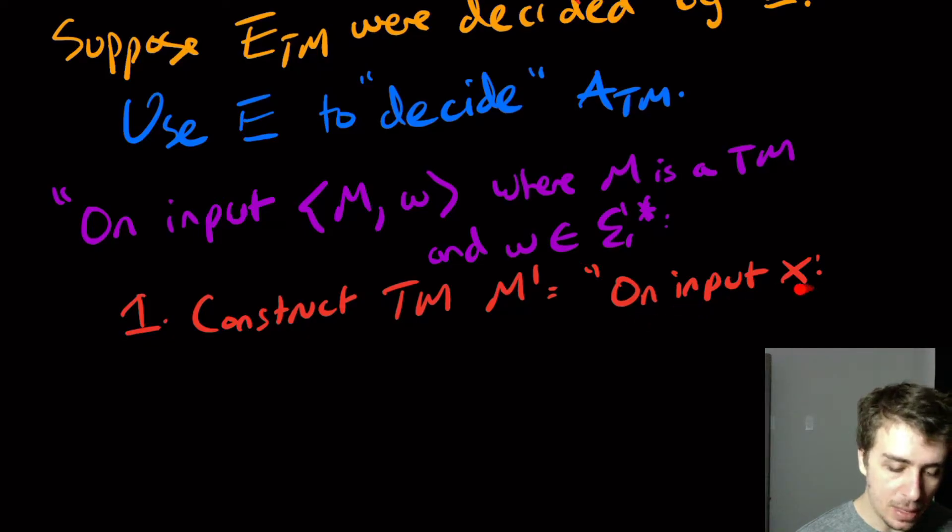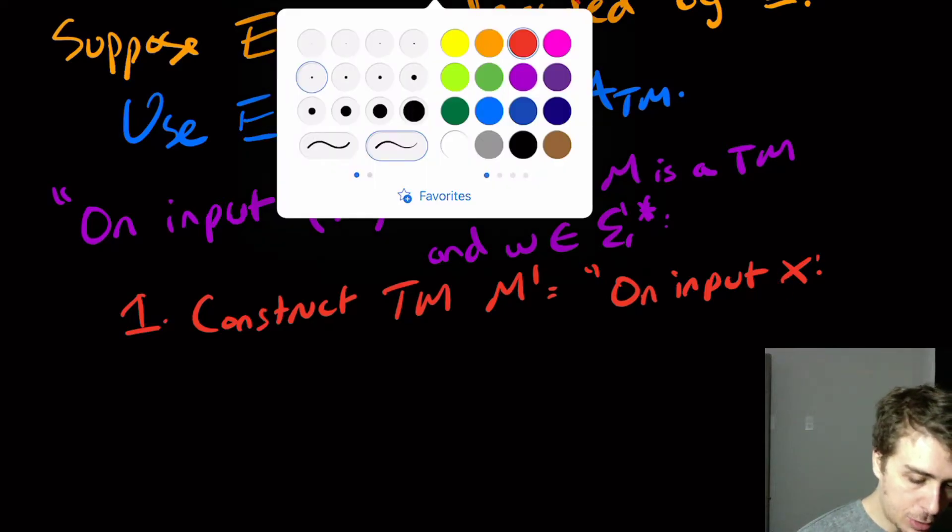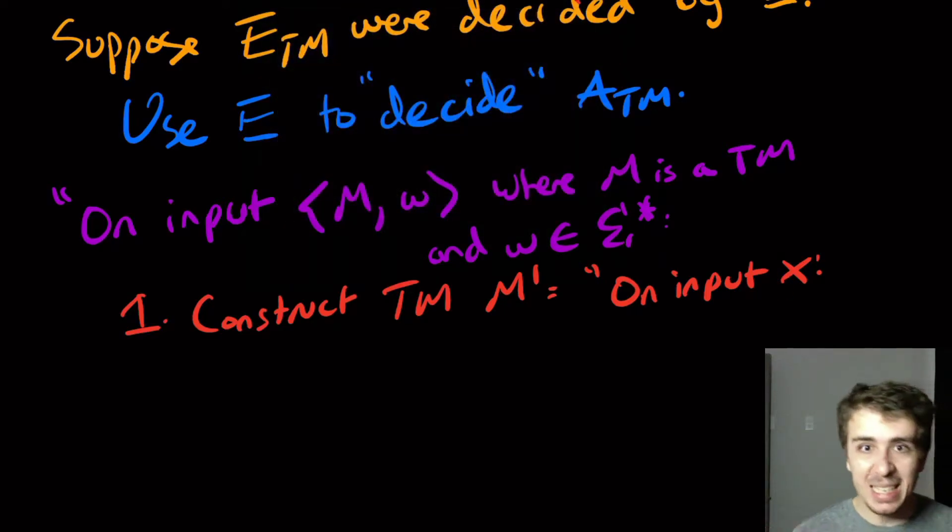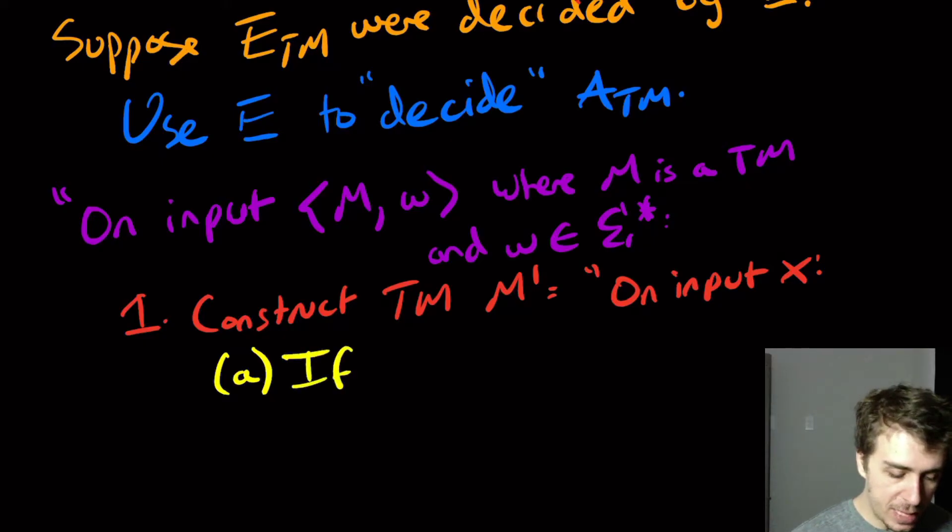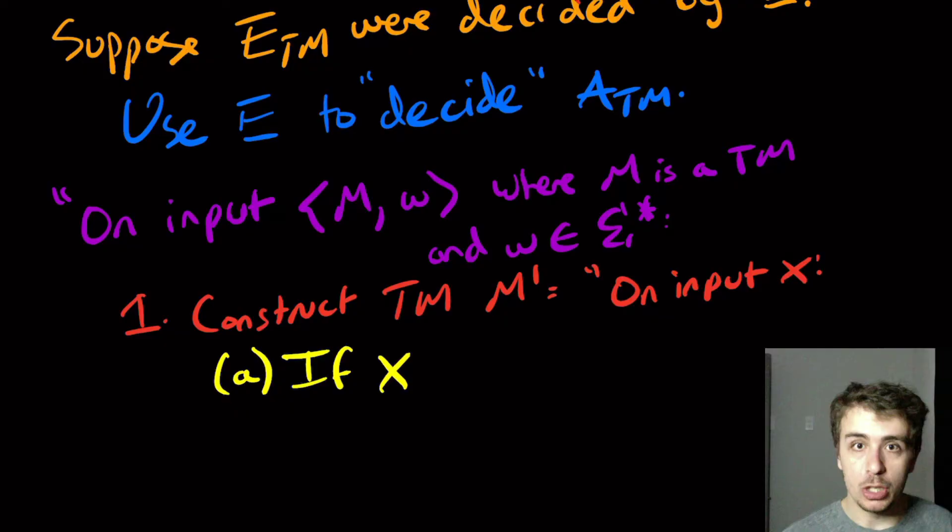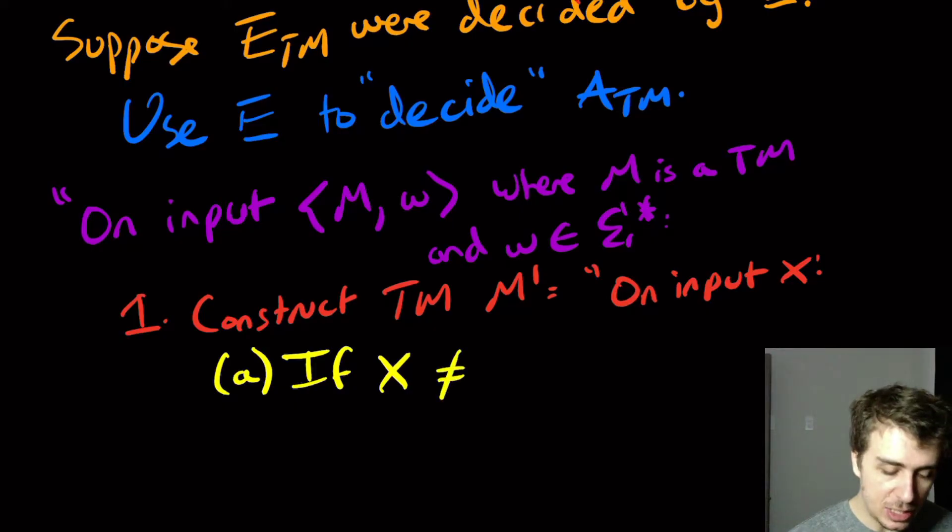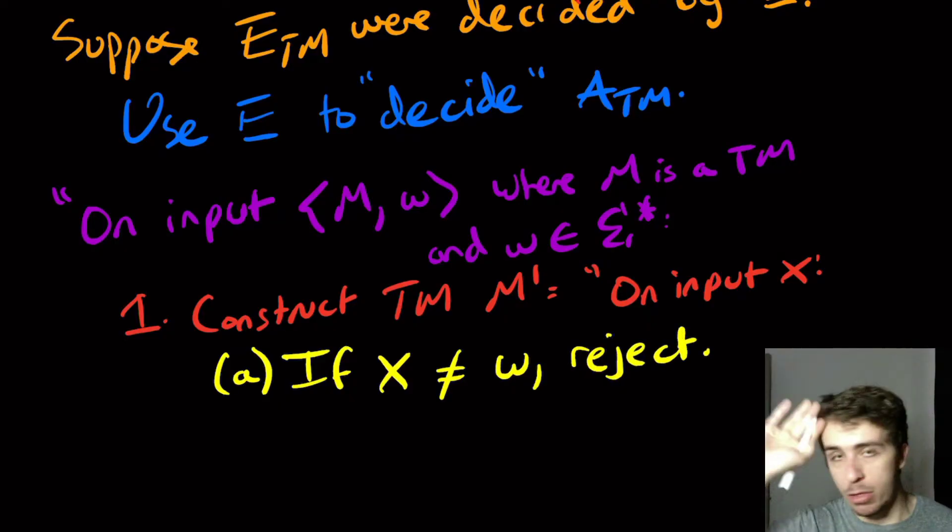So on input X, it's just some arbitrary input. It could be equal to W or not. So there are a bazillion ways of doing this. This is not the one way of doing it. But the way we're going to do it is if this X string that this M' new machine gets is not W, then we reject outright. Just, if it's not W, throw it away.